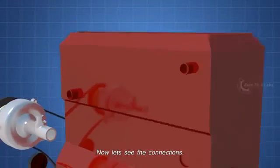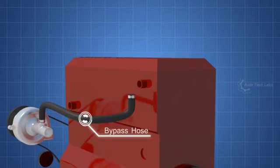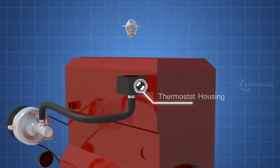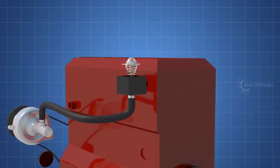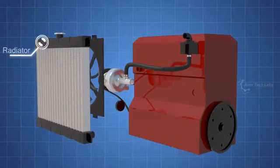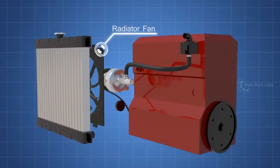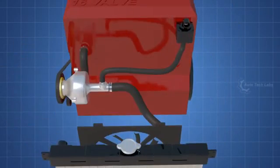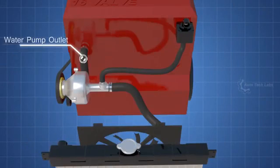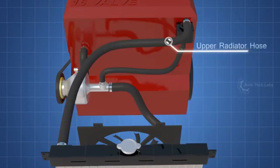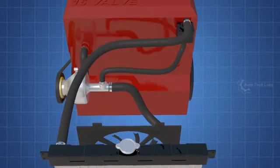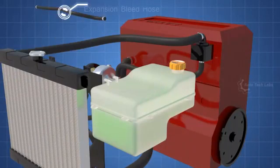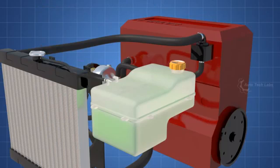Now let's see the connections. The thermostat bypass hose. The thermostat housing. Inside, the thermostat. The radiator and the radiator fan. The lower radiator hose. The water pump outlet hose. The upper radiator hose. The coolant expansion tank. The expansion bleed hose. Coolant overflow hose.